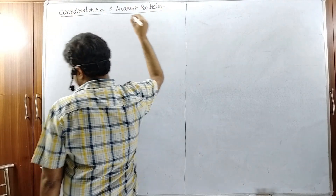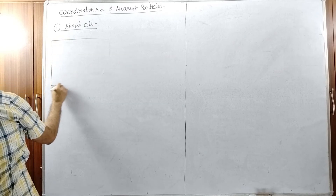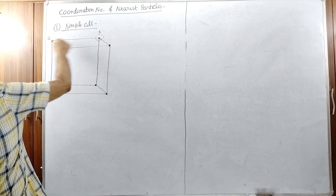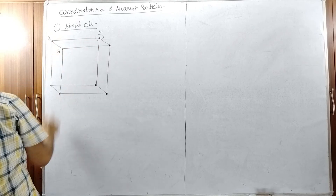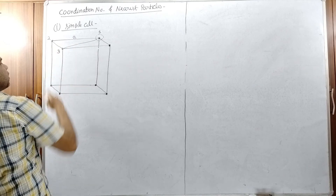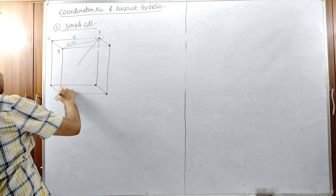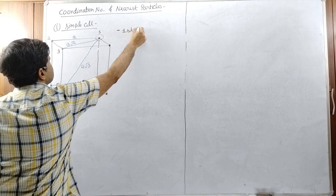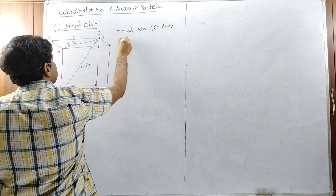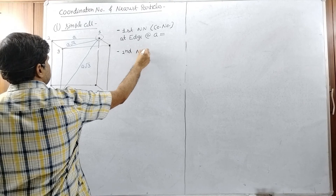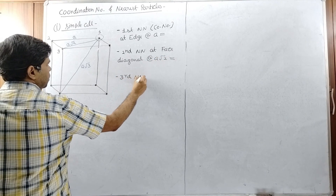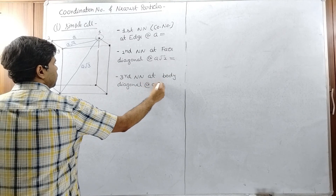In the simple cubic unit cell, particles are present at the corners only. The reference particle is particle number one. Particle number two is at the corner of the edge, particle number three is at the face diagonal at distance a√2, and particle number four is at the body diagonal at distance a√3. The first nearest neighbor determines the coordination number — it is at the edge at distance a, the second nearest neighbor is at the face diagonal at a√2, and the third nearest neighbor is at the body diagonal at a√3.